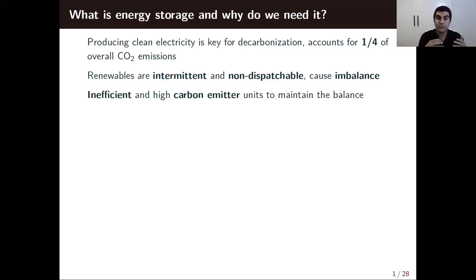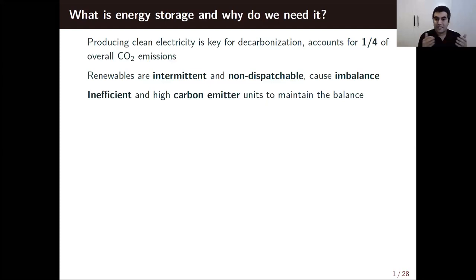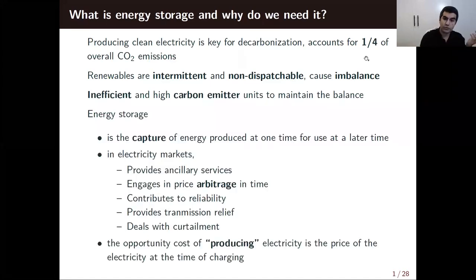The way we are trying to make that happen now is by subsidizing renewables. But renewables are intermittent and not dispatchable, and because of the nature of electricity, that intermittency combined with changes in demand creates imbalance. In the absence of energy storage, the way we maintain balance is basically by using inefficient and high-carbon-emitting units. Energy storage makes electricity more durable — it captures energy produced at one time for use at a later time.